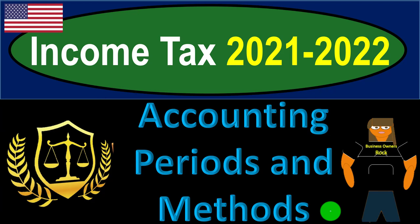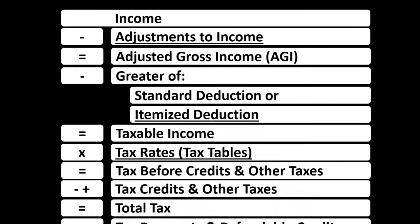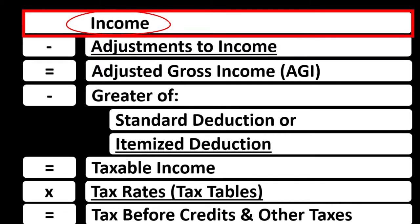Income tax 2021-2022: accounting periods and methods. Most of this information can be found in Publication 334, Tax Guide for Small Business 2021. The Income Tax Formula starts with income, noting that we would have a subschedule — basically an income statement with income and expenses.